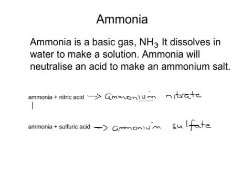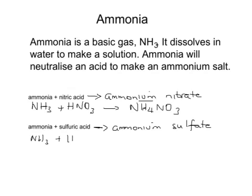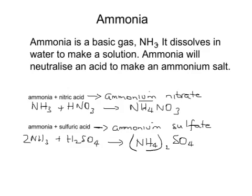The formula of ammonia is NH₃. In the first case it reacts with nitric acid, HNO₃, to make ammonium nitrate — here the ammonium ion is NH₄⁺, giving NH₄NO₃. Ammonia with sulfuric acid, H₂SO₄, gives ammonium sulfate. The ammonium ion is NH₄⁺; we need two of them to balance one SO₄²⁻ ion, so the formula has NH₄ in brackets with SO₄: (NH₄)₂SO₄. We need to balance the equation by having two ammonias for every sulfuric acid.